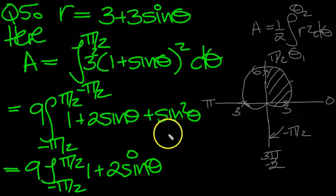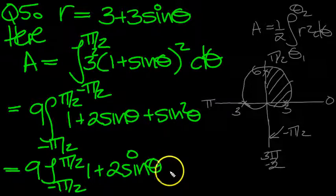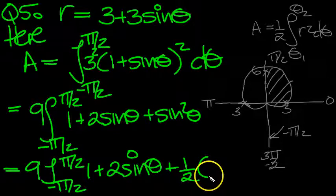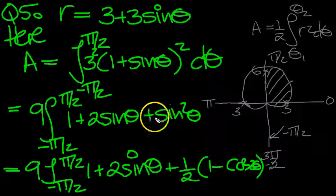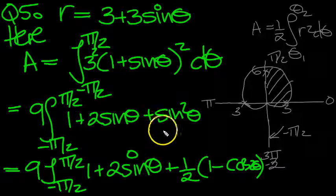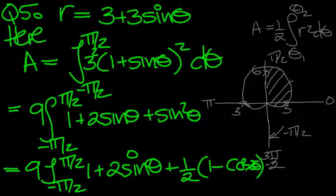Now sine squared can be replaced. We'll put a half here, and it can be replaced by 1 minus cos 2 theta. The half there, because we wanted to write 2 sine squared theta, and that's 1 minus cos 2 theta, d theta.